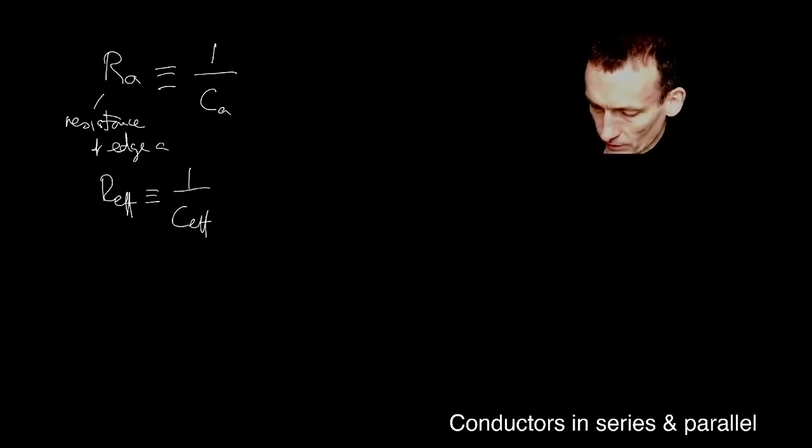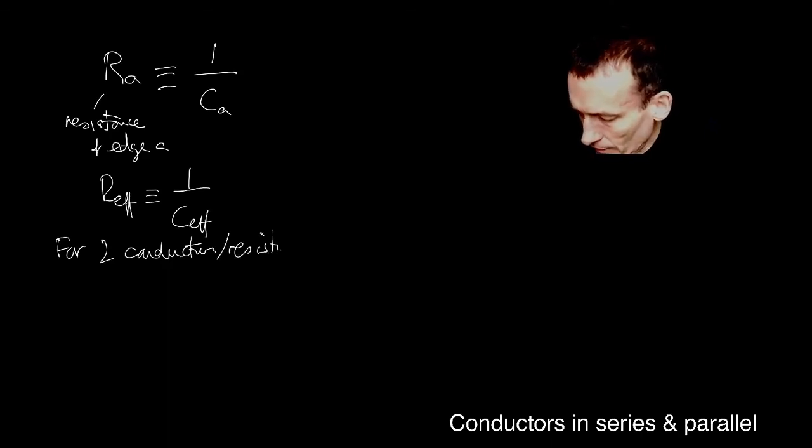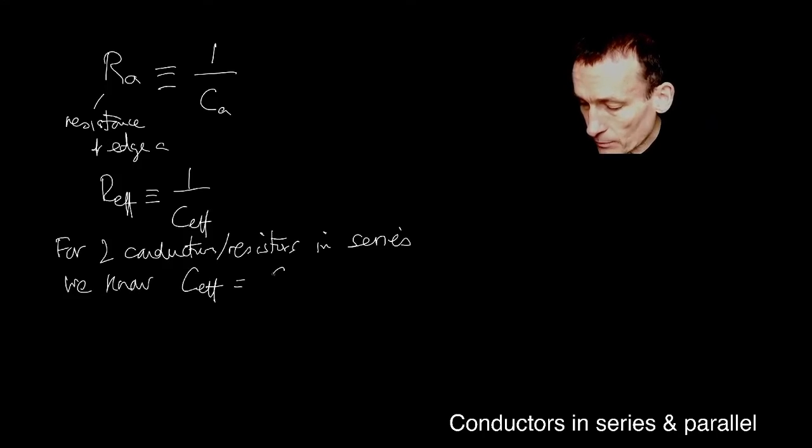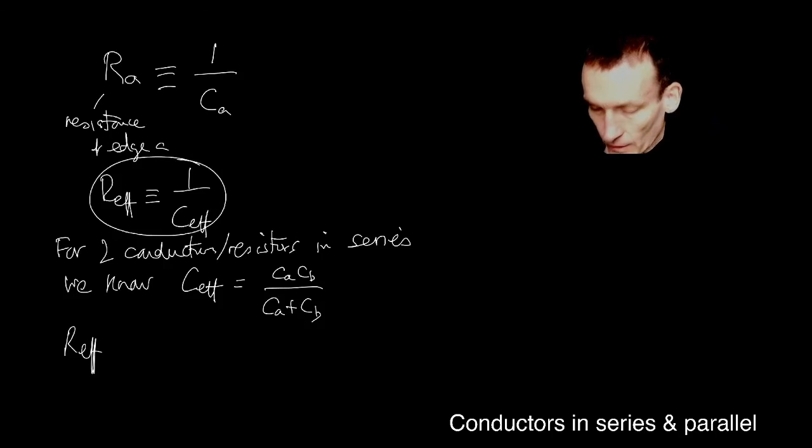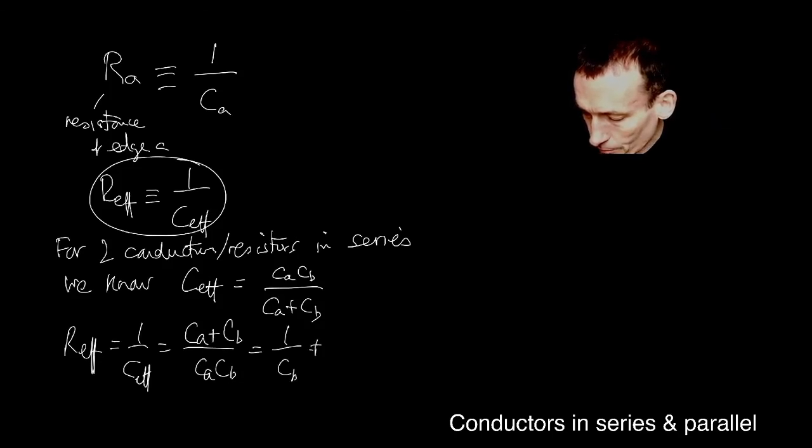And I've just worked out the effective conductance. So for two conductors or people call them resistors sometimes, it's just depending on what your viewpoint is. Resistors in series. We know now that CEF is the product of the conductances over the sum of the conductances. So consequently, by this, the effective resistance is one over that. Which is CA plus CB over CA CB. Which you can just simplify to be this. And then that of course is just RB plus RA. Because RA is one over CA.